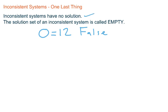Now, if you are asked to express the solution set of an inconsistent system, what you're going to have to say is that the set has nothing in it. Or in words, we say that the solution set of an inconsistent system is called empty.